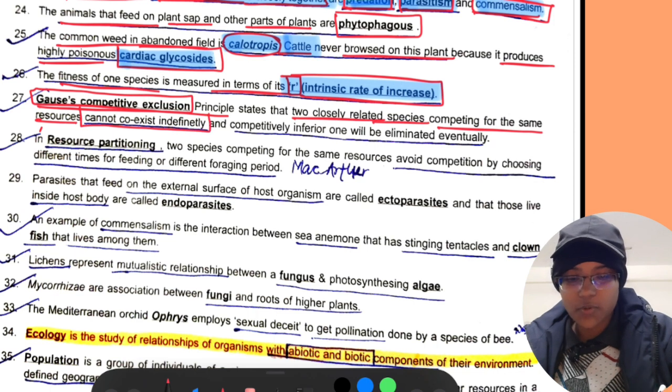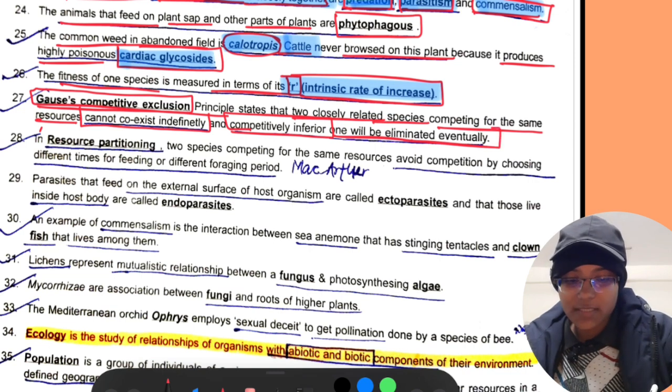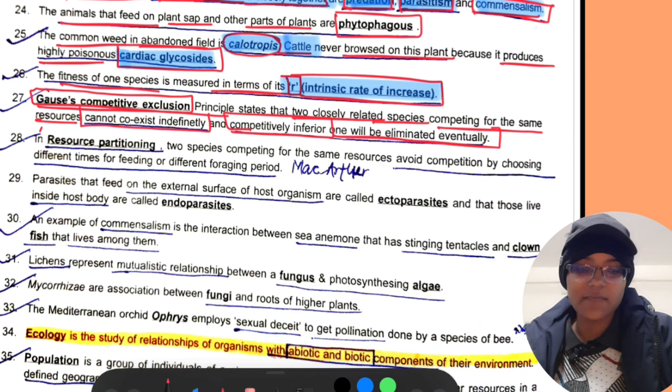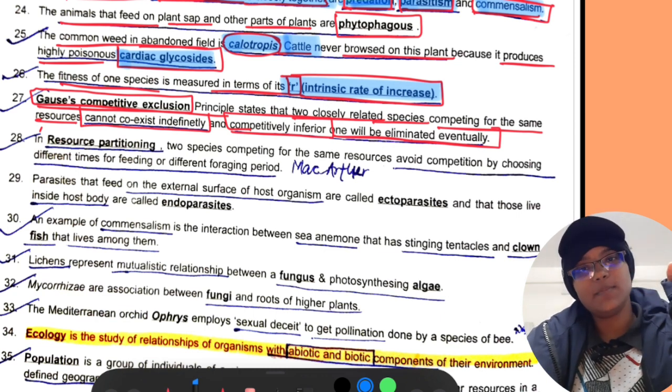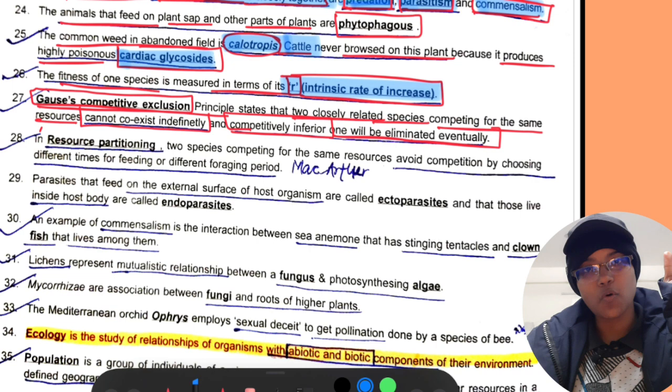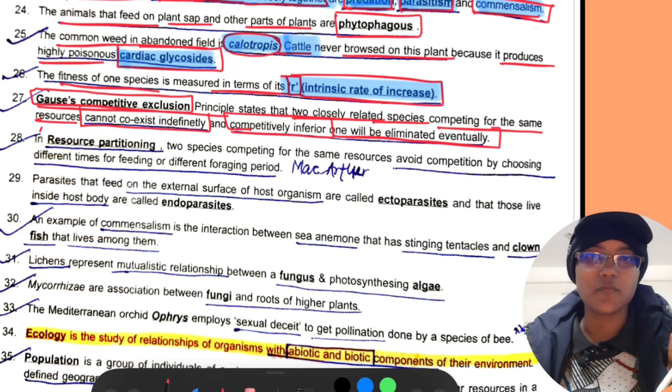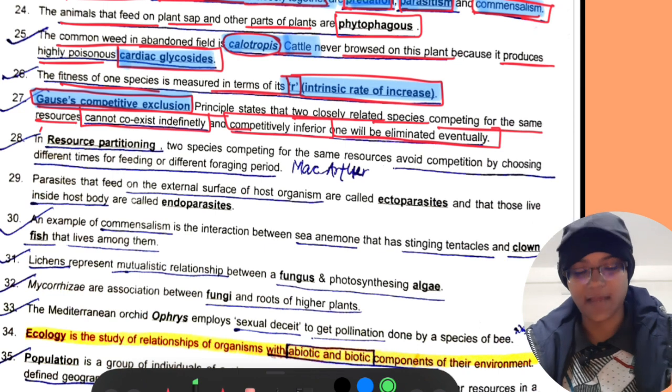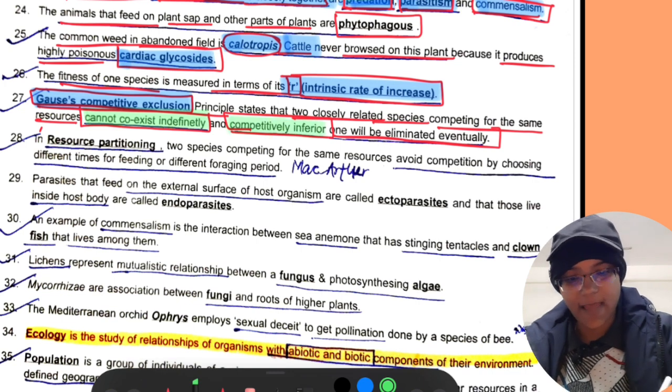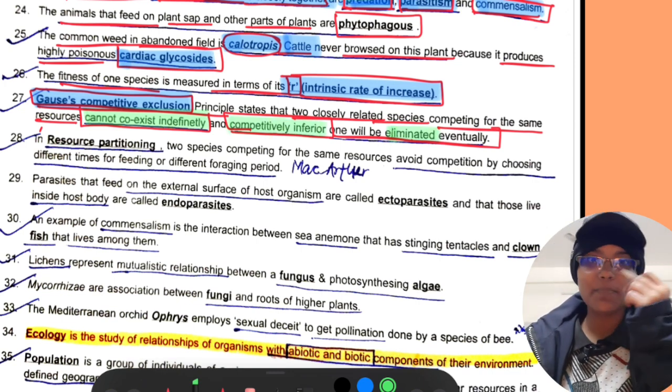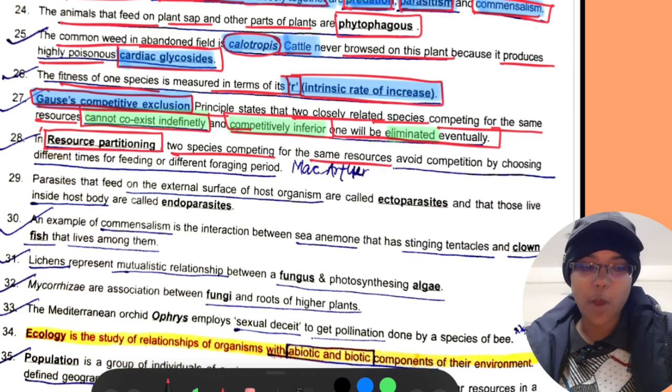Gause's competitive exclusion principle states that two closely related species competing for the same resources can't coexist indefinitely and the competitively inferior one will be eliminated eventually.